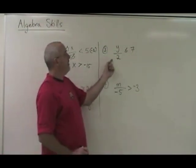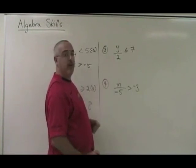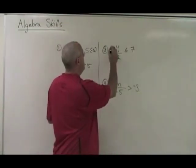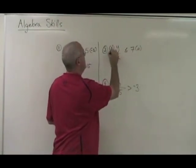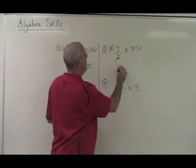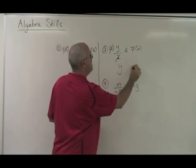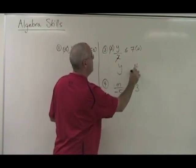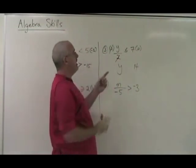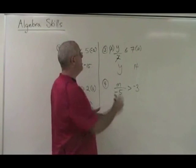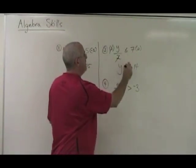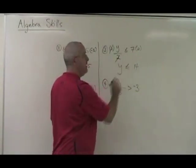Example 3. Y is being divided by 2. I multiply both sides by 2. These 2's cancel. Y is isolated. 7 times 2 is 14. Because I multiply both sides by a positive number, I leave the symbol the way it already is.